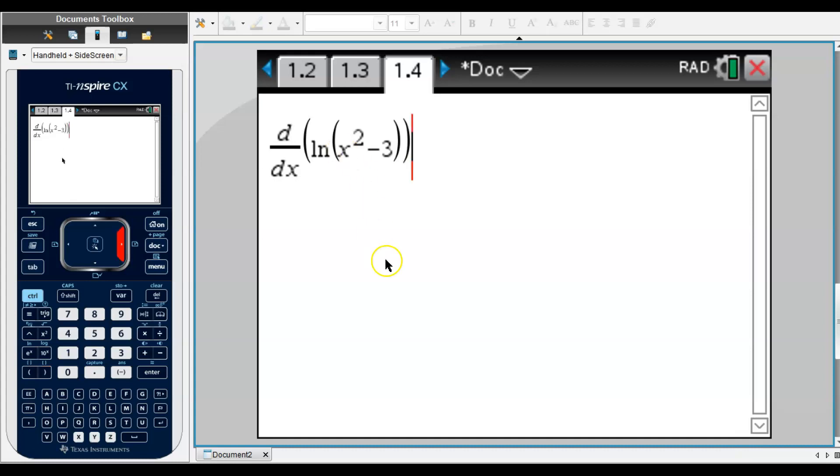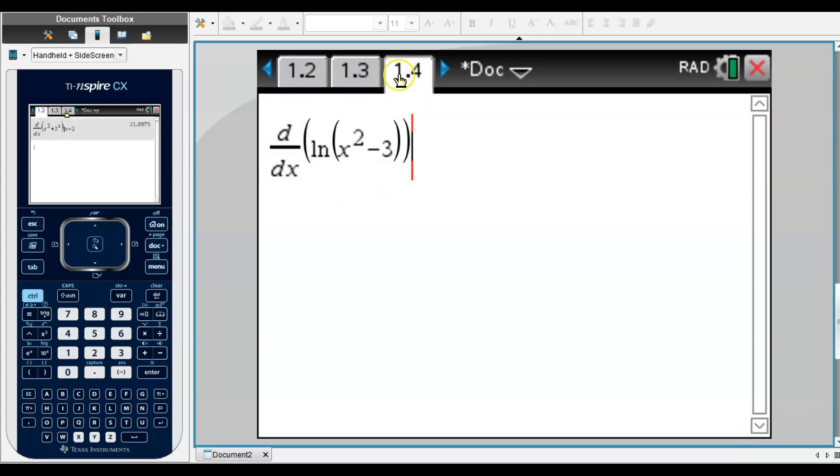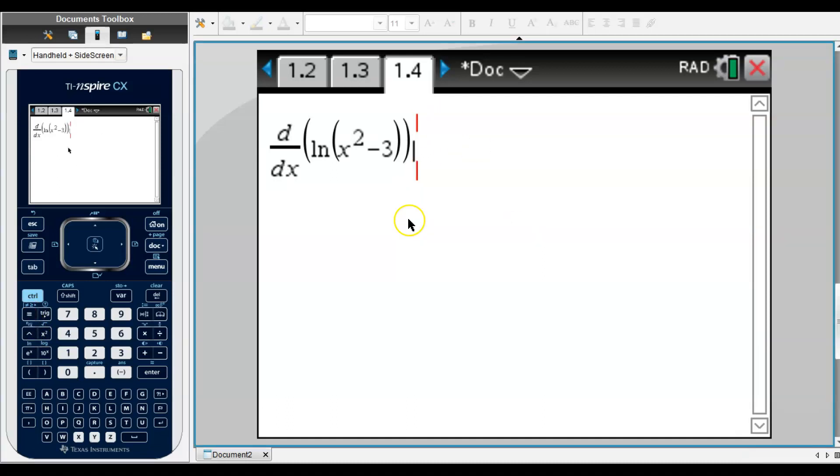Notice it doesn't have the evaluation bar. You're going to have to tell it to evaluate at a certain value. So you hit Control, then the equal sign, and notice there's that bar there. So evaluate at x = 2. I hit Enter, and there's my answer: 4. The cool thing about these calculators is you can click the up arrows and copy and paste or reenter stuff.